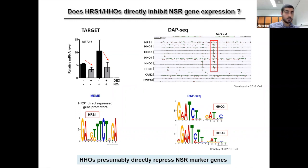So to further investigate this data, we compared the promoter sequences of the top 500 downregulated genes in the TARGET data using the MEME algorithm. And we found that this motif is highly represented in this list. Interestingly, this motif is quite similar to these two motifs bound by HHO2 and HHO3 identified by DAP-seq.